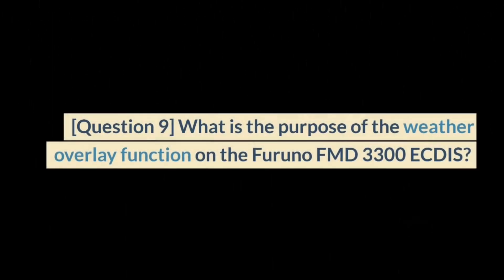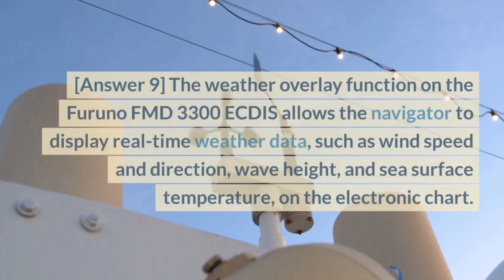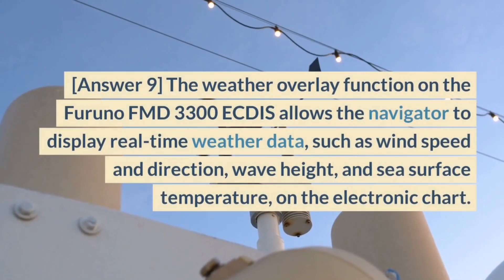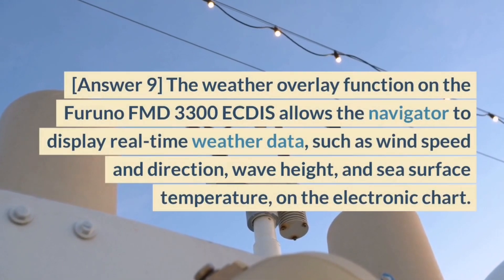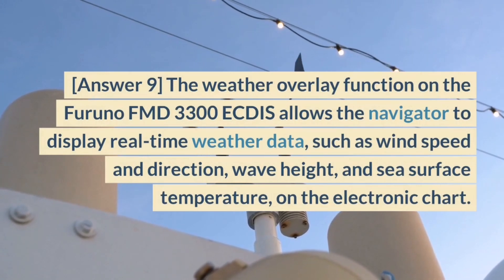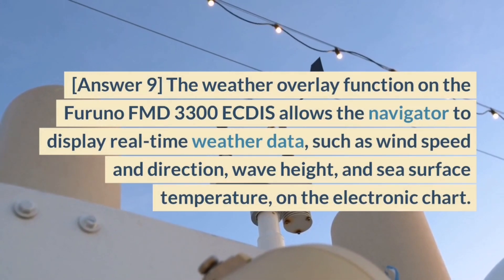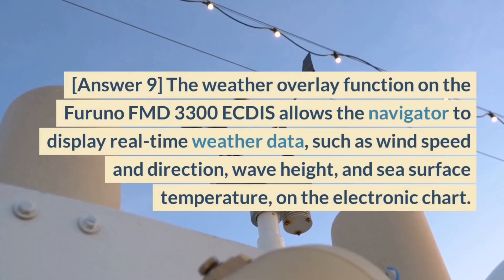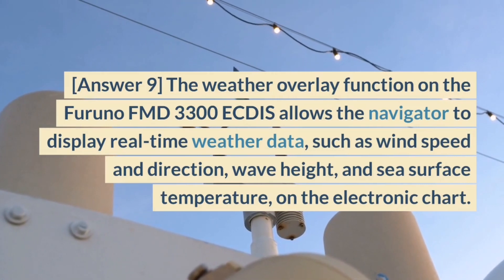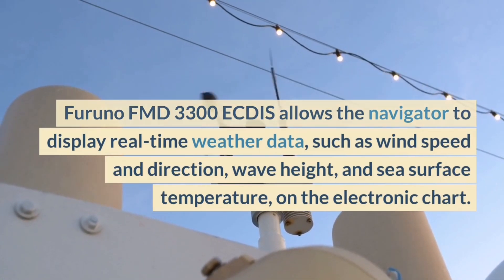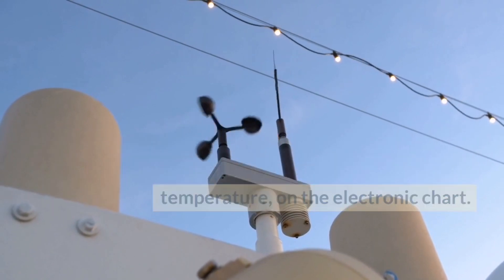Question 9. What is the purpose of the weather overlay function on the Furuno FMD 3300 ECDIS? Answer 9. The weather overlay function allows the navigator to display real-time weather data, such as wind speed and direction, wave height, and sea surface temperature, on the electronic chart.